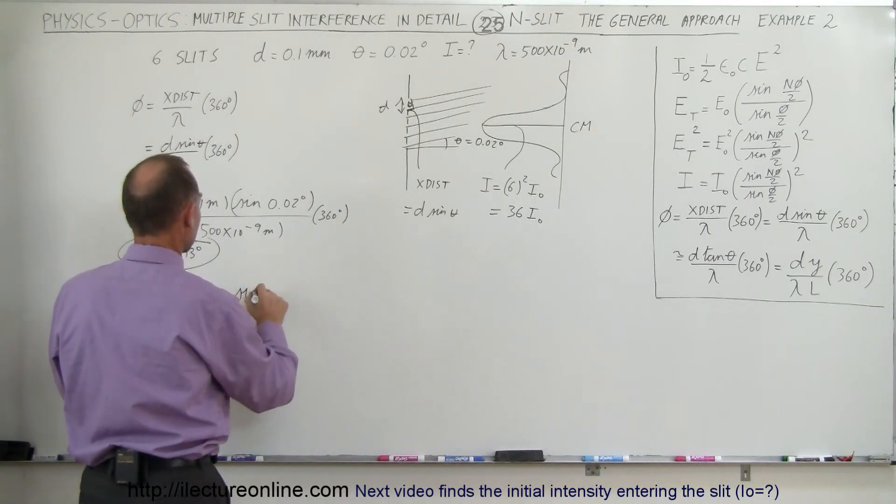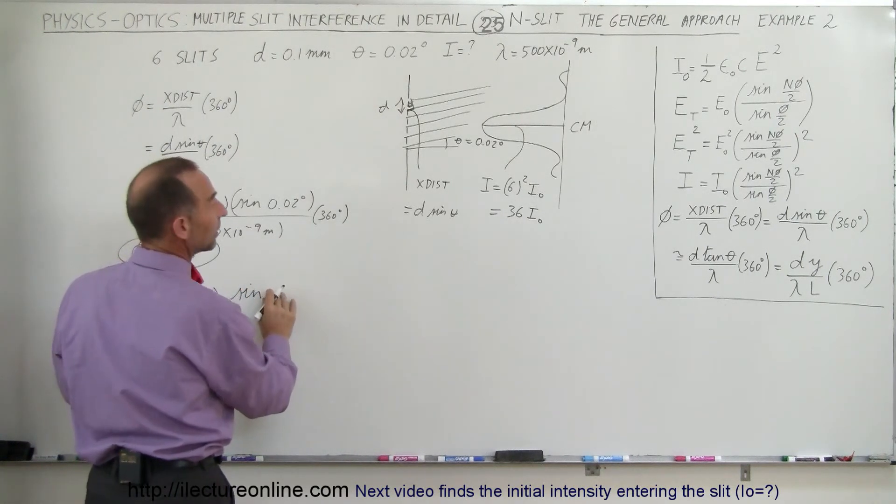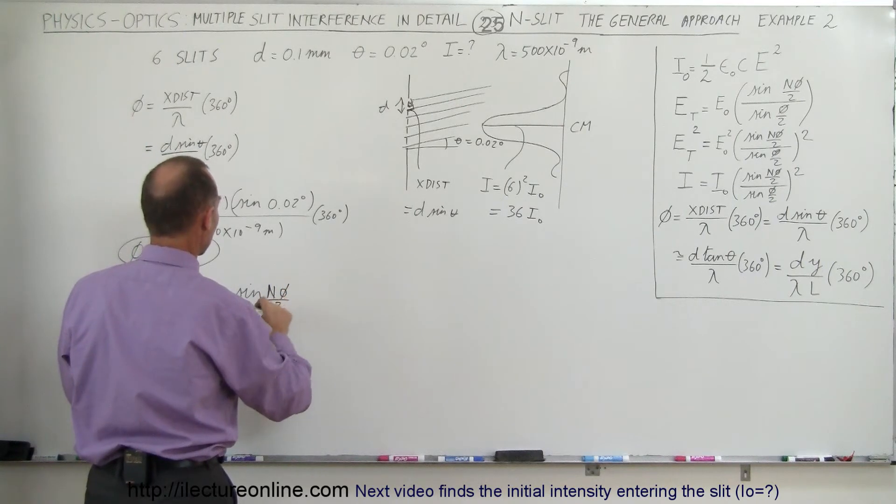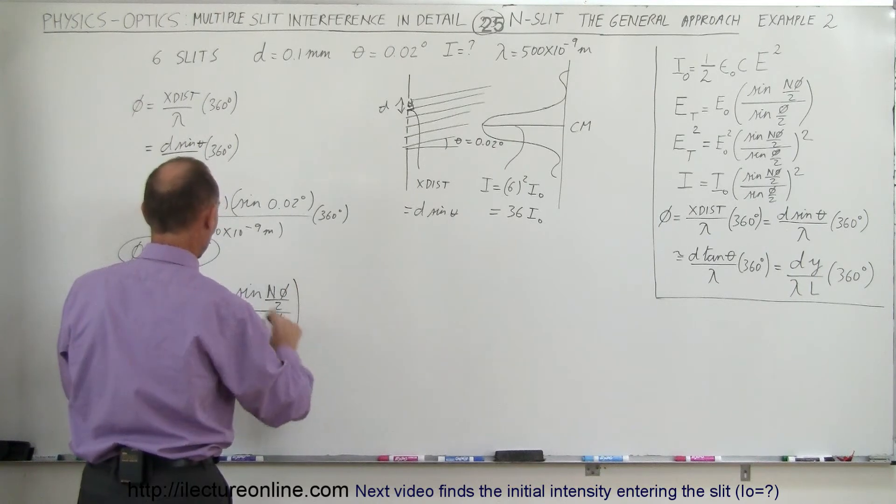...times the sine of n times the phase angle divided by 2, divided by the sine of the phase angle divided by 2, the whole quantity squared. I'll just write the general equation down.